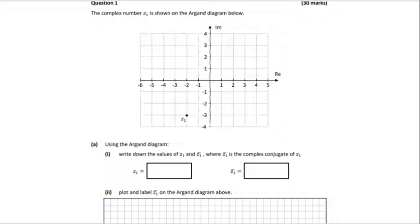In part A we need to get Z1 from the diagram. If we look at the diagram we can see if we go across in the real axis minus 2 and down minus 3 in the imaginary axis, we can get the coordinates so it's -2 - 3i.